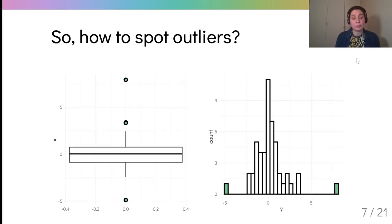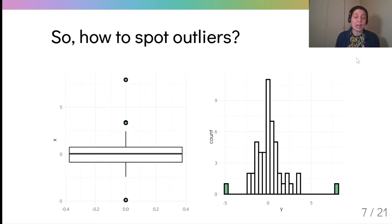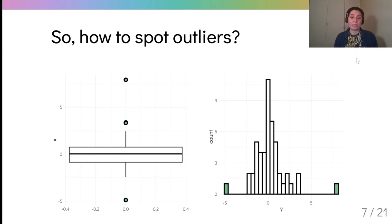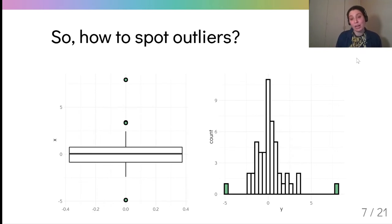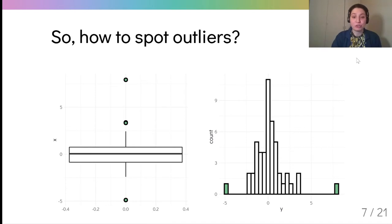But how can we spot outliers? You can use, for example, a box plot that represents the outliers as isolated data points, or you can use a histogram where you will see the outliers as the small bars that lie far from the rest of your data.